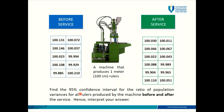In this particular problem, we are interested in finding the confidence interval for the ratio of population variances. So this is not about population mean, not about population proportion, but about population variances — particularly the ratio of population variances.